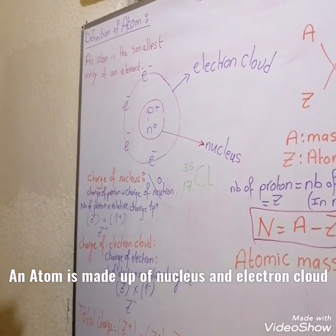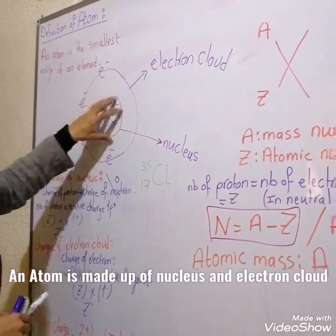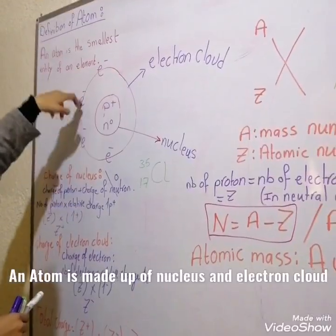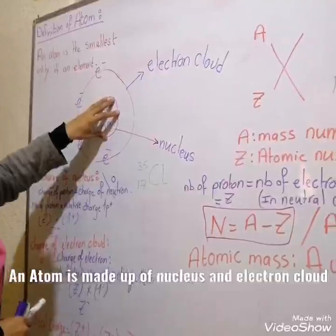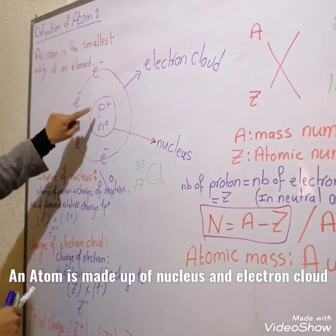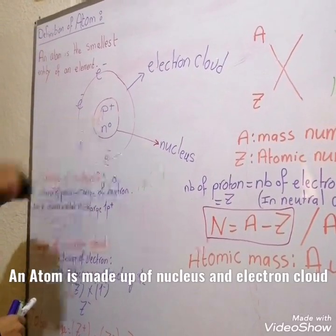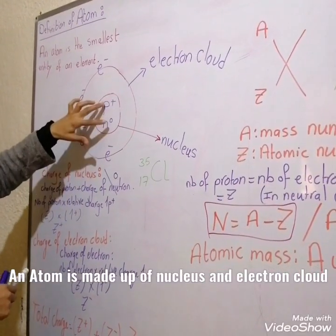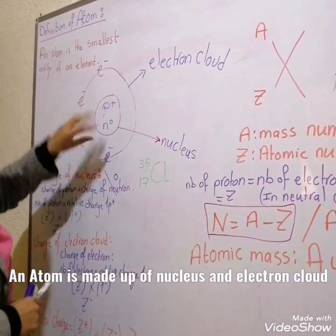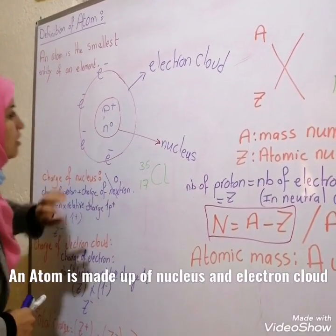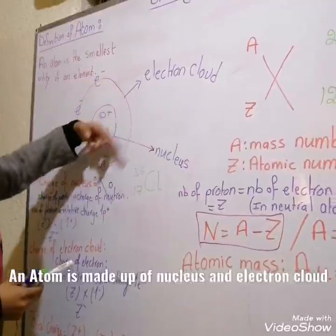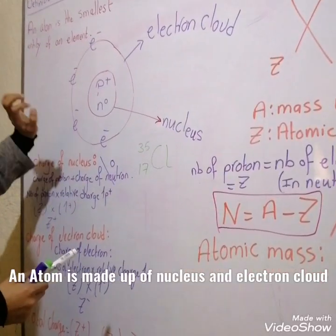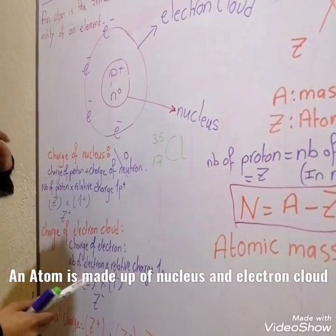First, atom is made up of nucleus and electron cloud. In the nucleus, we have protons and neutrons. Neutrons and protons live in the nucleus. But in the electron cloud, we have electrons that live in the electron cloud.